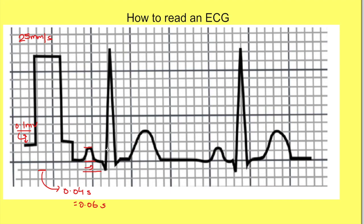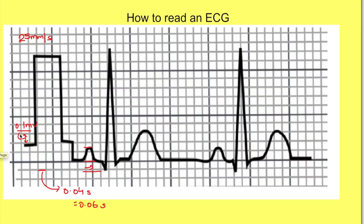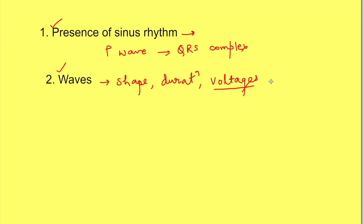For reading an ECG, first check for sinus rhythm — whether the signal generated at the SA node is reaching the ventricles — by seeing if every P wave is followed by a QRS complex. Second, look at the waves: their shape, duration, and voltages. Voltages of waves vary in different leads, but duration will be the same in all leads. Check a separate video (linked in the description) for why voltages differ in different leads.